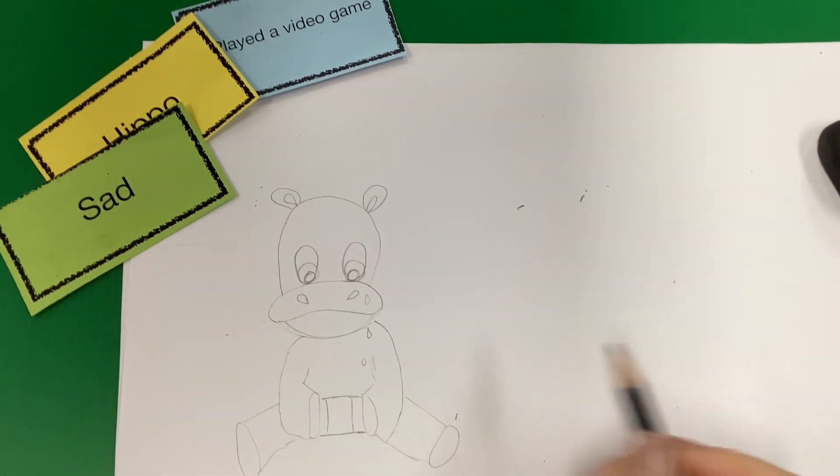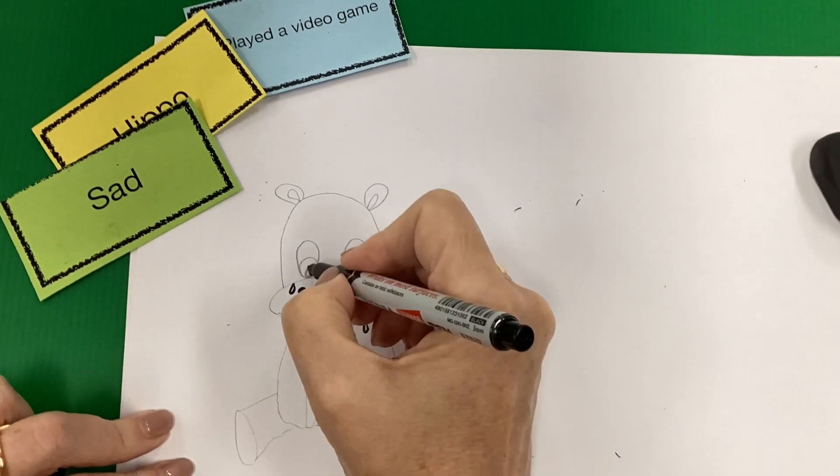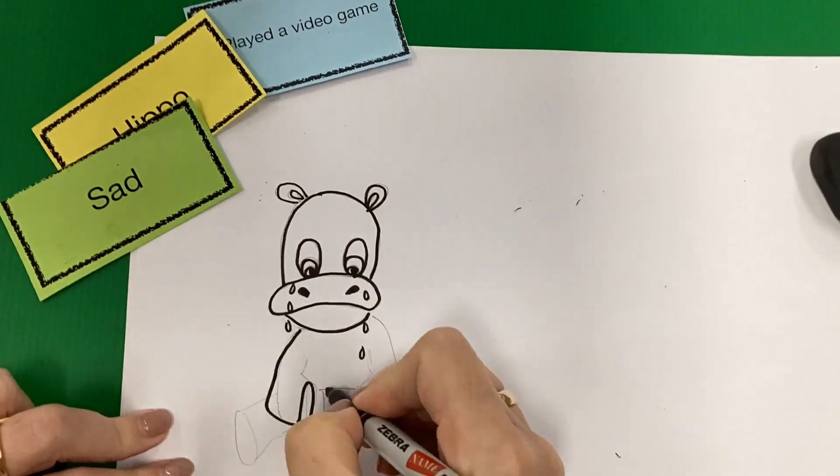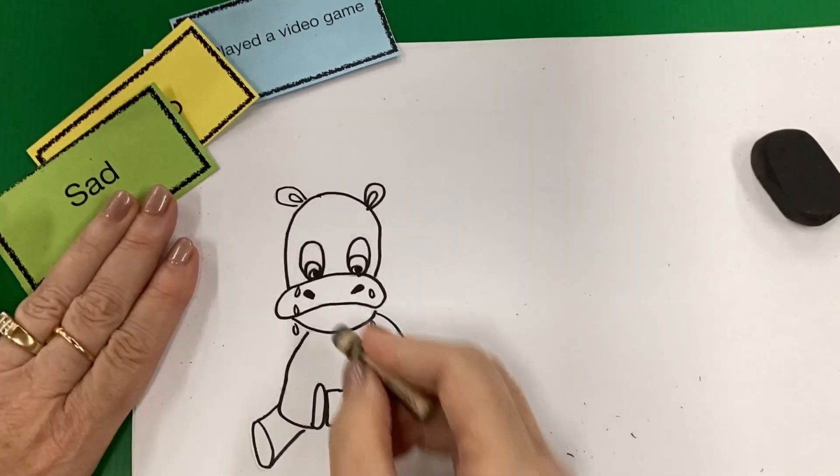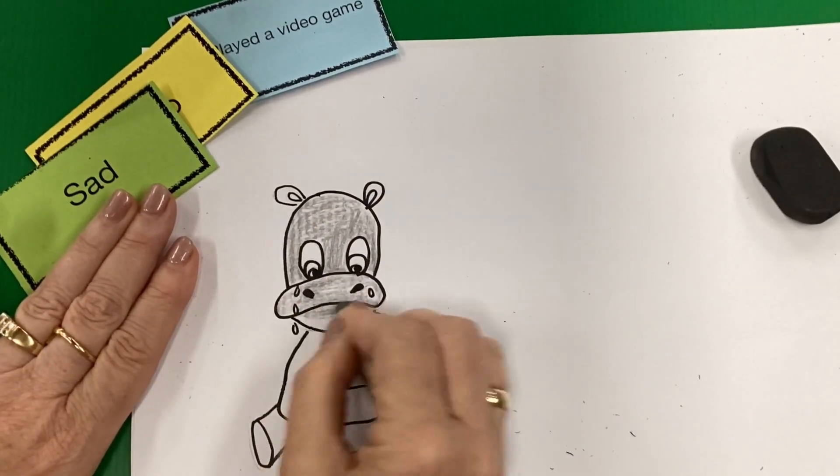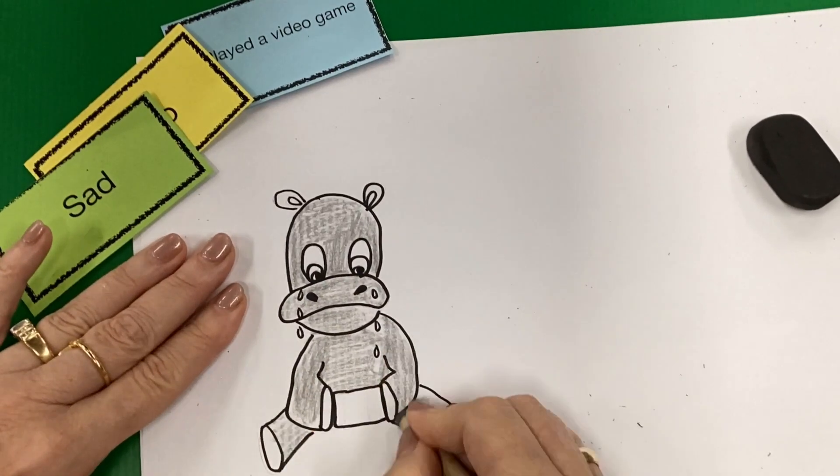I'm going to add some tears in and then I'm going to take a zebra marker and I'm going to outline him. And then I'm going to erase all my pencil lines, pull out a crayon and give my picture some nice color.